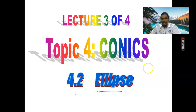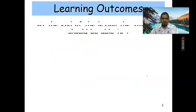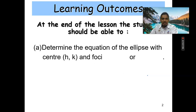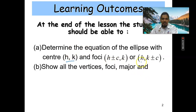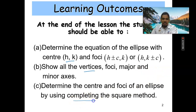Just to imagine what the shape of an ellipse looks like — just imagine that if you have seen what is called a rugby ball before. We have the center, the minor axis, and the major axis. At the end of this lesson, students should be able to determine the equation of an ellipse with center (h, k), the foci, vertices, major and minor axis, and determine the center using the completing the square method.